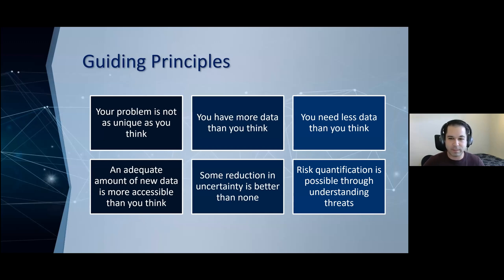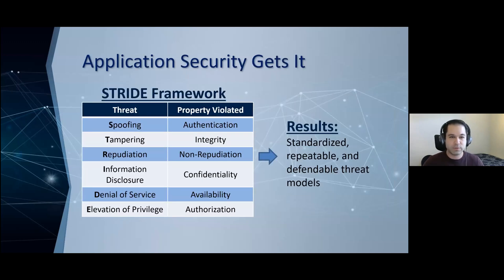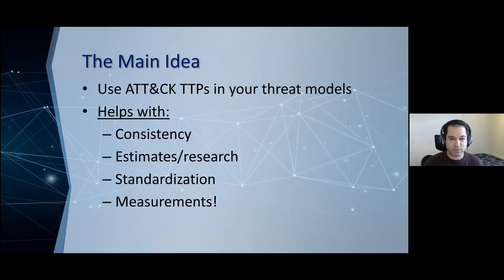From these, I drew a couple of guiding principles, largely summarized from How to Measure Anything. Essentially, we have more data than we think we do, and you need less than you think you do in order to reduce uncertainty and drive improvements in your quantitative risk analysis. Risk quantification is possible through understanding your threats and doing threat models and threat profiling. You see these kinds of improvements with frameworks in application security — using frameworks like STRIDE and DREAD to drive actionable, repeatable, and defendable threat models. The main idea is to use ATT&CK tactics, techniques, and procedures in your threat models.